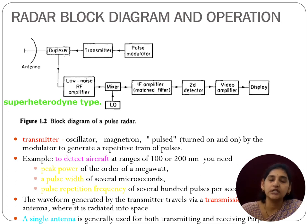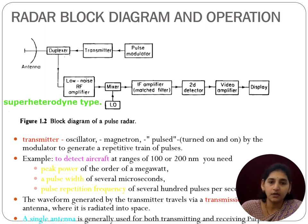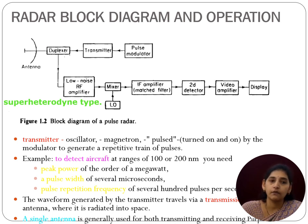The filtered information is sent to the detector. A 2D detector is used here — one for audio and one for video. If you want to display and amplify the video, you can use a video amplifier, and that will be shown on the display. For the transmitter, both an oscillator and a magnetron are present inside the transmitter block.